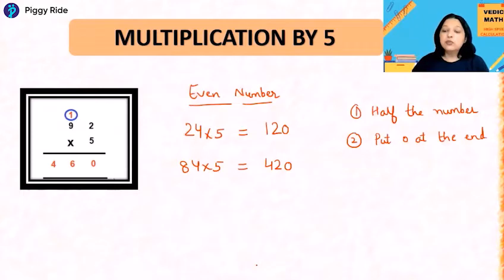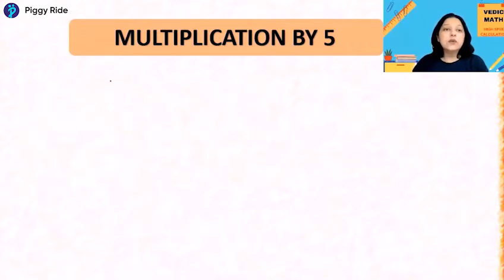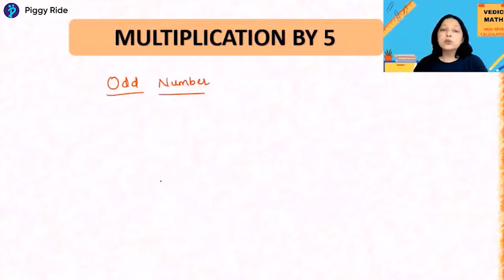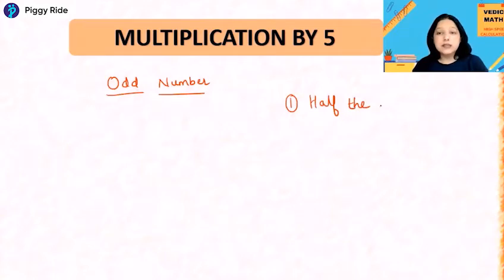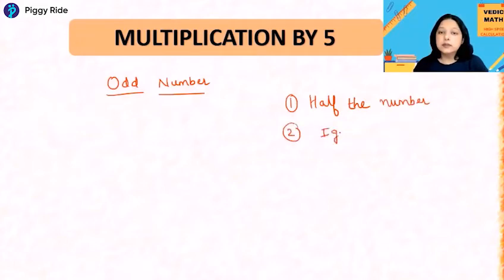Now let's do odd numbers. If you have any odd number, the concept will remain the same with one extra step. For odd numbers, step 1 is: half the number. Now you know odd numbers — you cannot half them properly, the answers are always in decimal. Step 2 is: ignore the decimal.